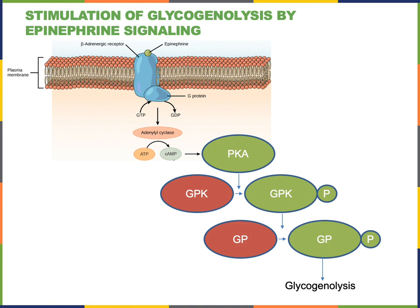Protein kinase A phosphorylates glycogen phosphorylase kinase, or GPK. GPK becomes activated when phosphorylated by protein kinase A, and then functions as a kinase itself, phosphorylating the protein glycogen phosphorylase. Phosphorylation activates glycogen phosphorylase, an enzyme that breaks down glycogen — a polysaccharide found in animal cells as a way of storing carbohydrate. When glycogen is broken down, glucose molecules are released and can be used as an energy source through a catabolic pathway.